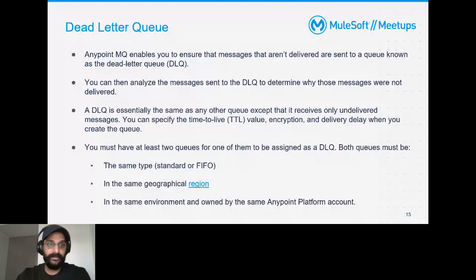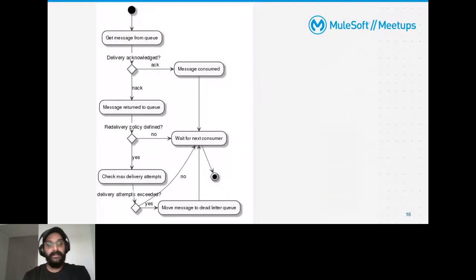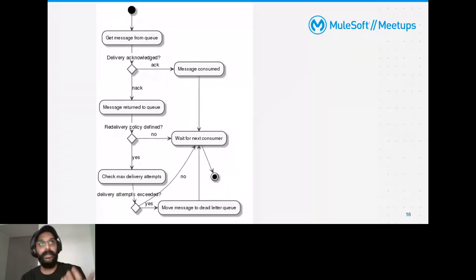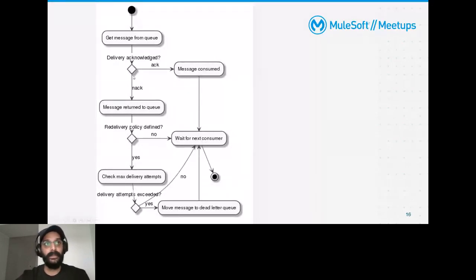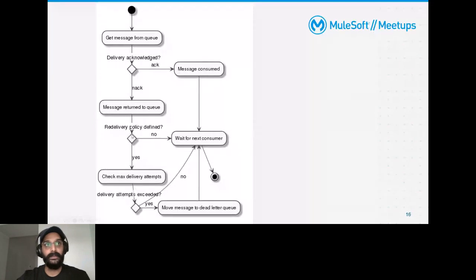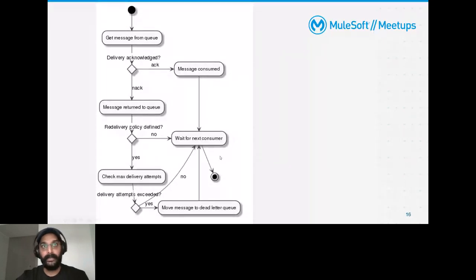Let's look at a diagrammatic representation of DLQs. When a message arrives at a queue, if it's acknowledged successfully, it's consumed and we move on. If it's NACKed — not acknowledged — the message is returned to the queue. A re-delivery policy is attached to the queue, and if the maximum delivery attempts — say three times — is exceeded, the message is sent to the Dead Letter Queue.